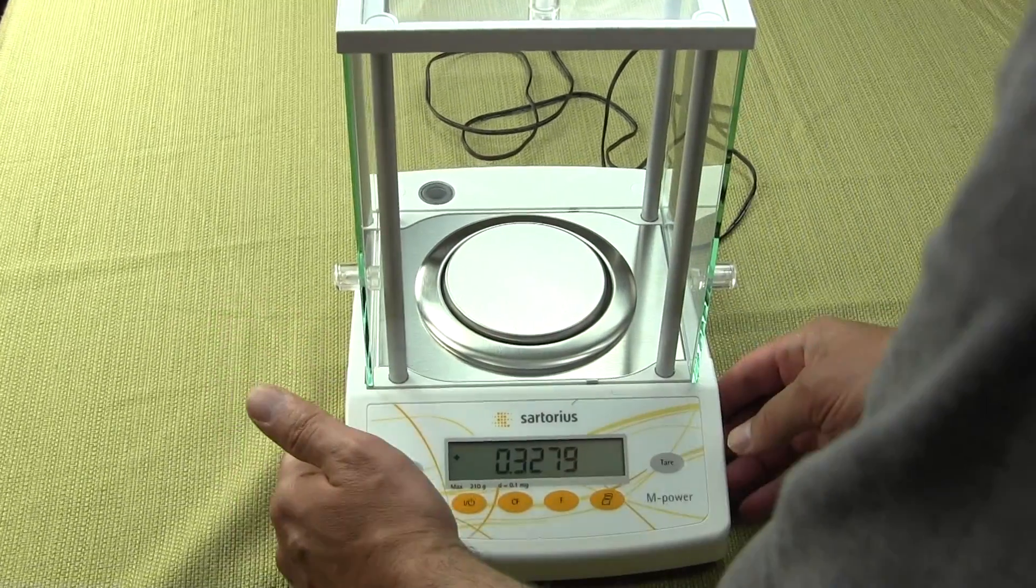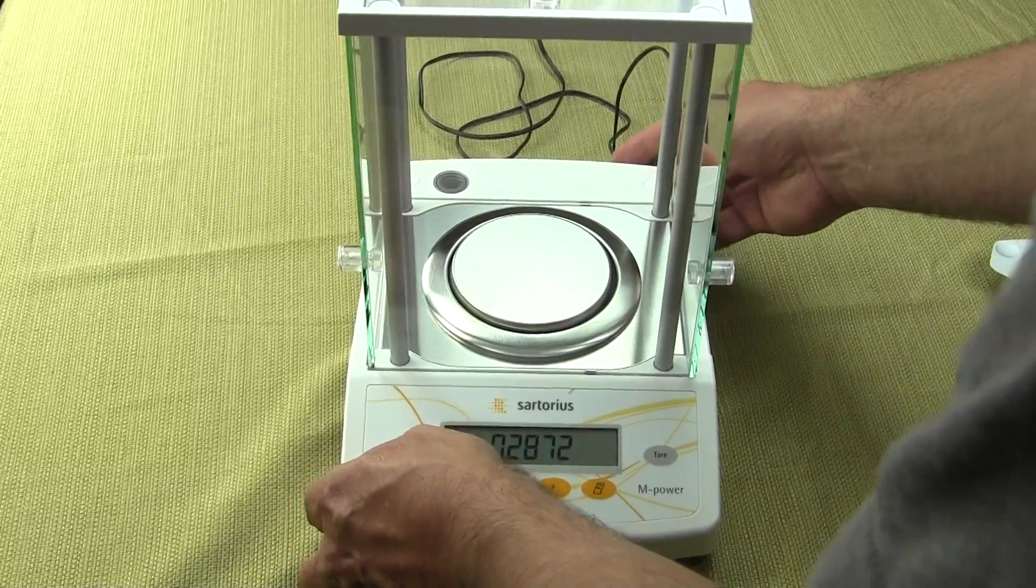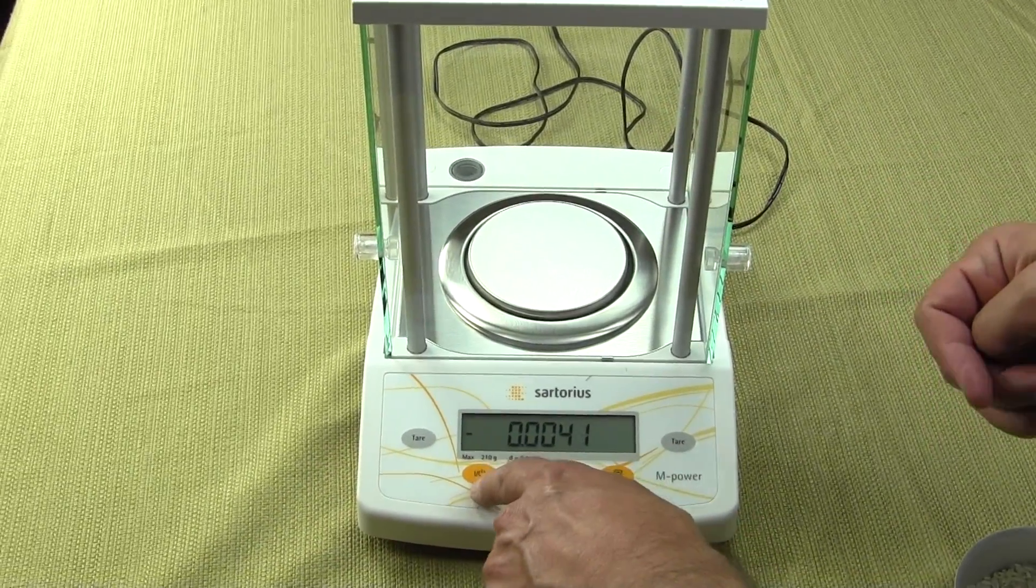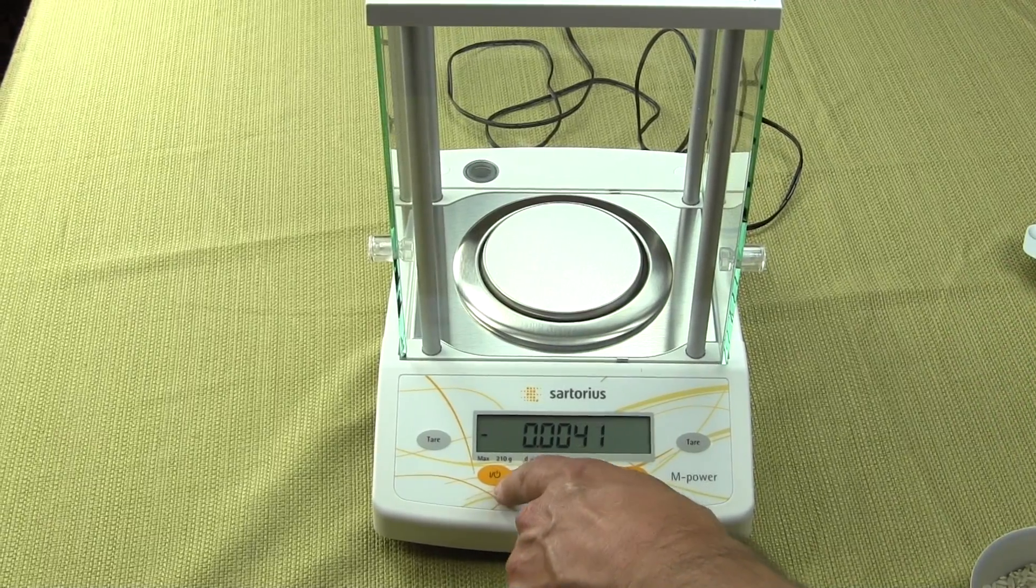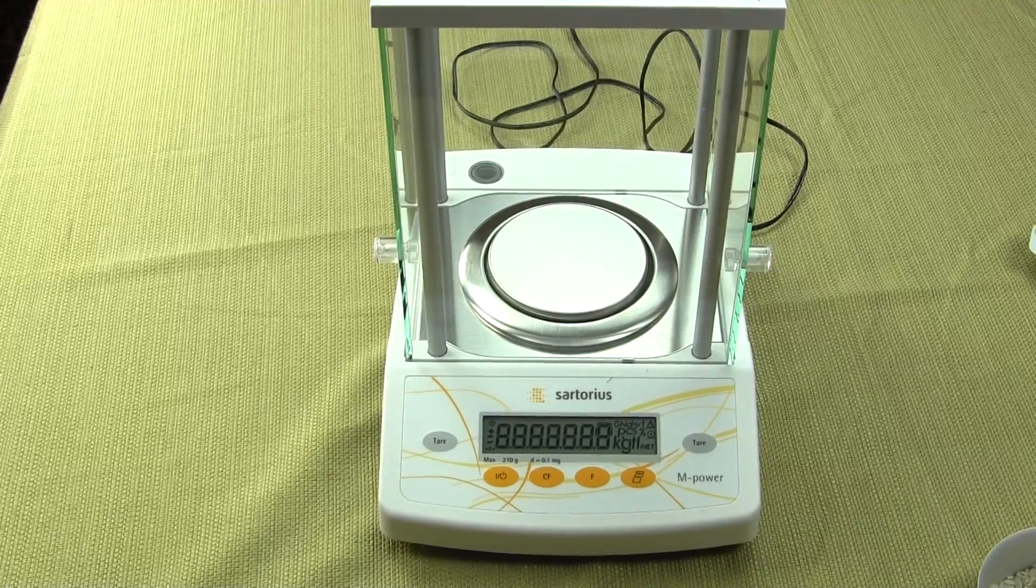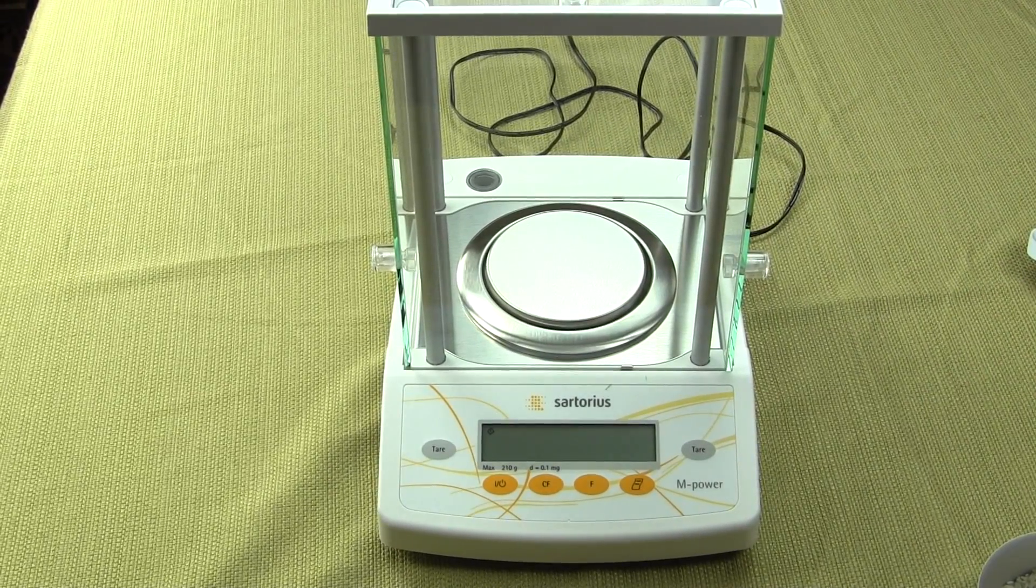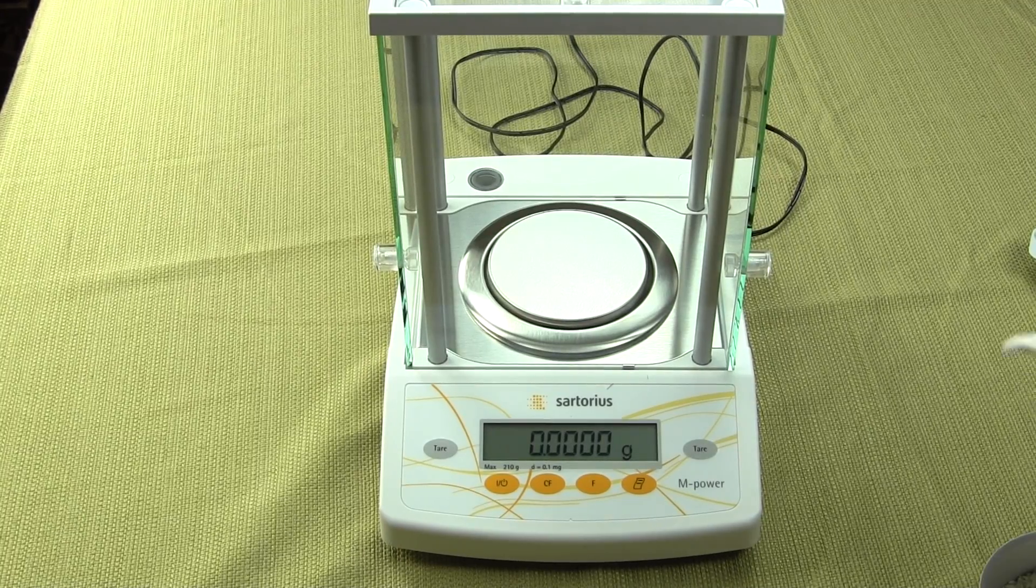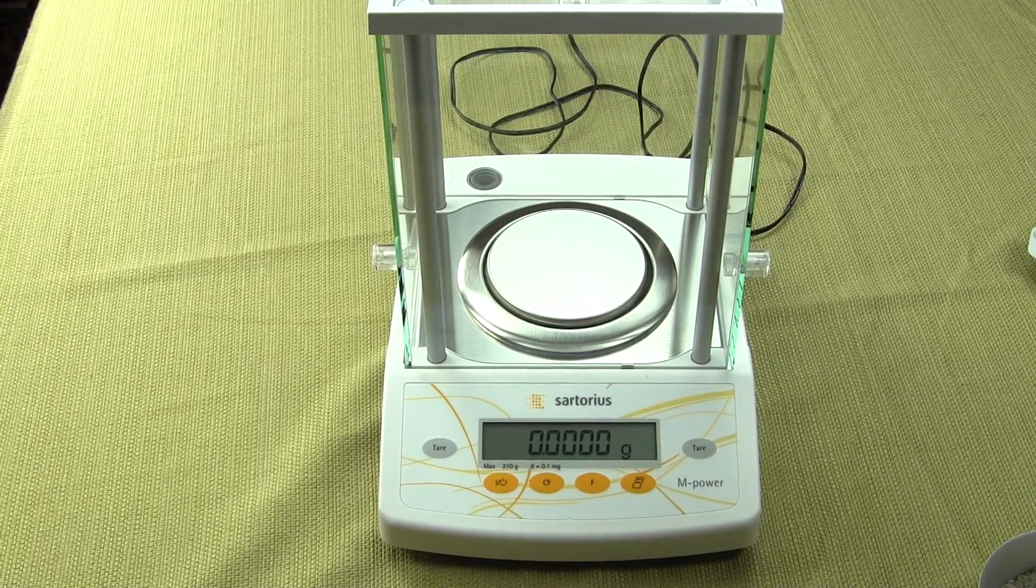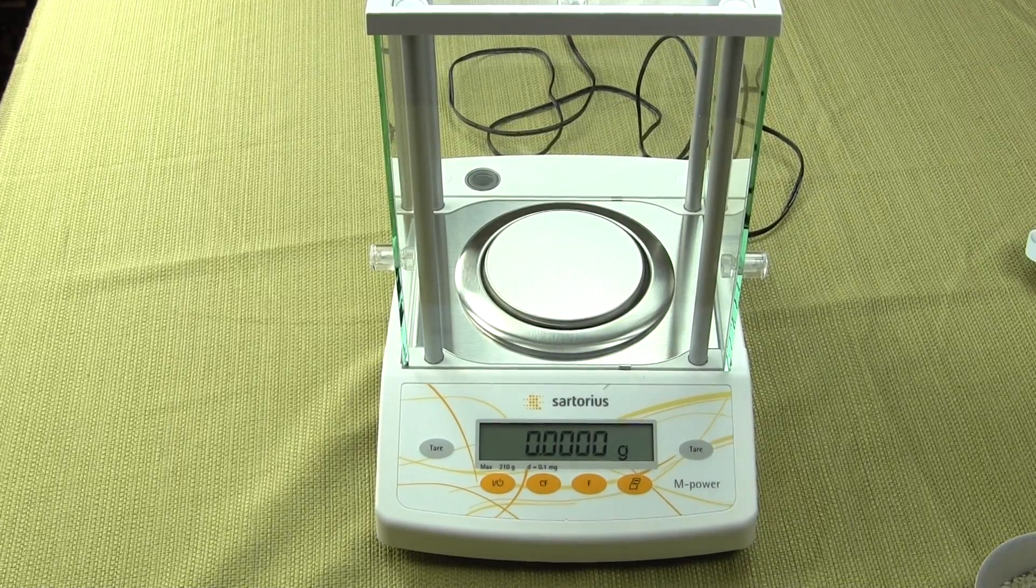Some of the features that you would see in Sartorius' premium quality balances have been removed or they're not incorporated in the entry level. So this is the Sartorius AZ214. There is the AZ124 that would give you 124 grams by a tenth of a milligram. And there's the AZ64. So there's three models in this series.